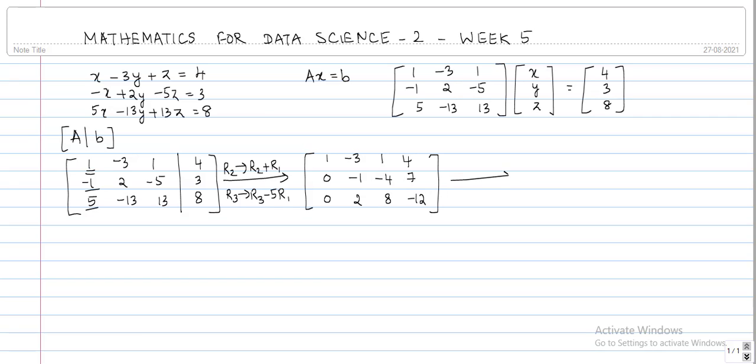Next we need to make this entry 1, so we will just multiply the second row with minus 1. So the new second row will be minus old second row. So 1, minus 3, 1, 4, first row remains as it is. Second row we multiply it throughout by minus 1, so 0, 1, 4, minus 7.